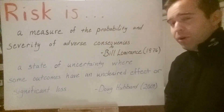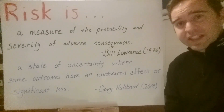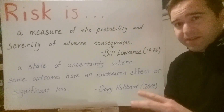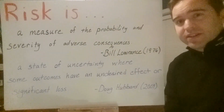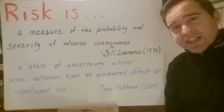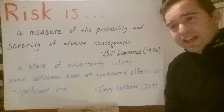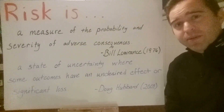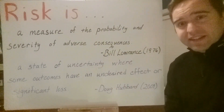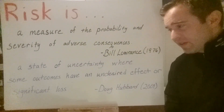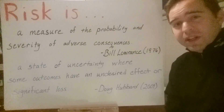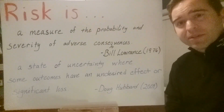We have to account for both probability and likelihood of uncertainty, as well as the severity of consequences or scale of the outcome. The third theme is that risk focuses on adverse consequences or undesired effects — significant losses. We don't have a risk of a fortunate event; we have a risk of an unfortunate event. We're measuring both the scale of the loss and the probability that that loss will happen at that scale.